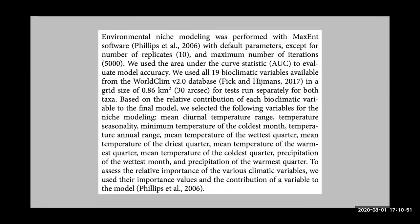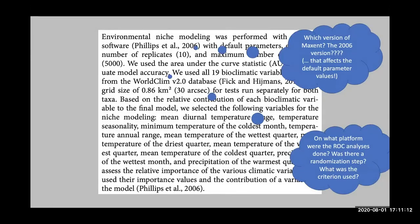Here's another one — and please, people, call it ecological niche modeling, not environmental niche modeling. It says: 'Performed with MaxEnt software with default parameters; used area under the curve statistic to evaluate model accuracy.' Which version of MaxEnt? Citing the Phillips 2006 paper — is that the 2006 version? The version you use affects default parameter values. On what platform were the ROC analyses done? Was there a randomization step? Were these independent data?